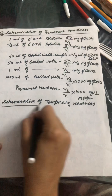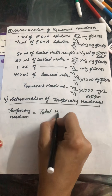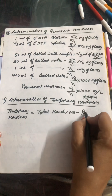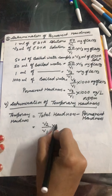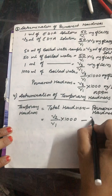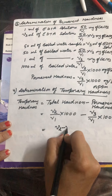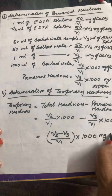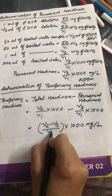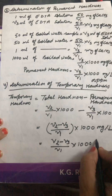How do we determine temporary hardness? Temporary hardness is equivalent to total hardness minus permanent hardness. The value of total hardness is V2/V1 × 1000, and permanent hardness is V3/V1 × 1000. After subtraction, temporary hardness equals (V2 − V3)/V1 × 1000 mg/L, which is equivalent to ppm.